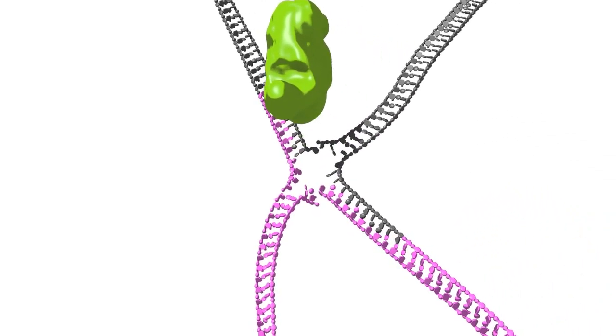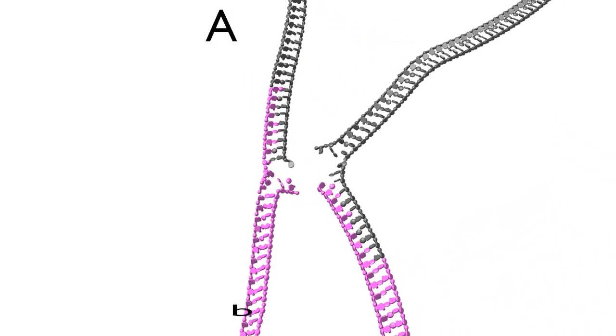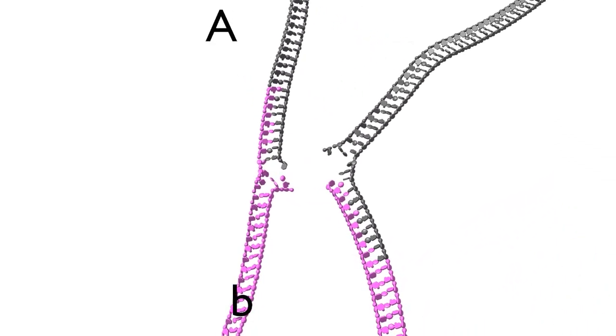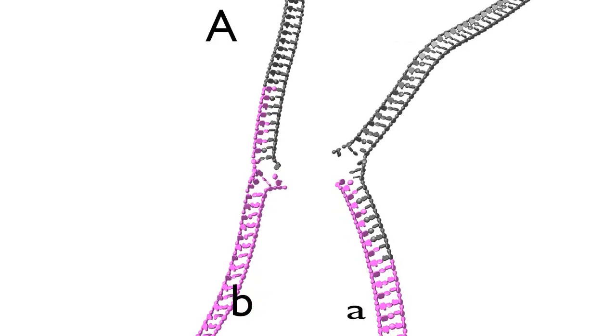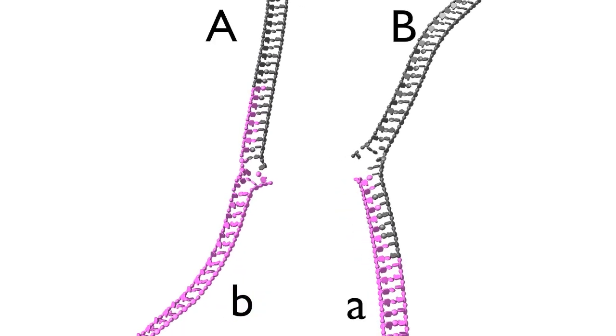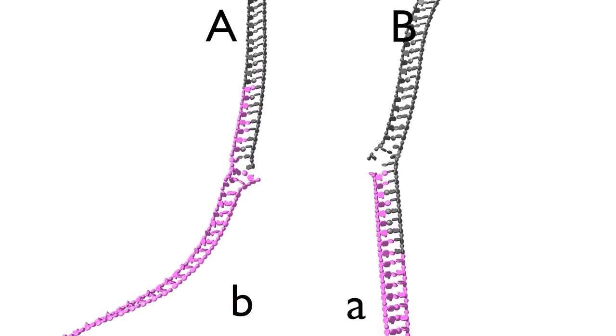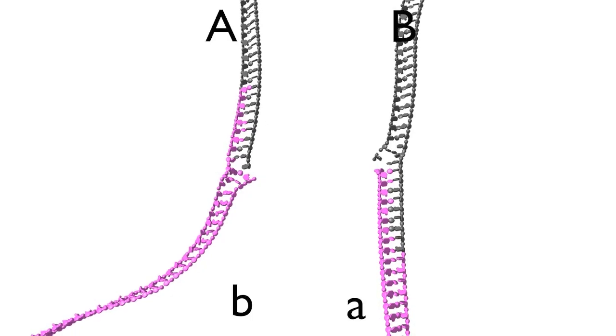Cleavage along the vertical axis, however, leaves big A grey and little b pink, and little a pink and big B grey, covalently linked to each other.